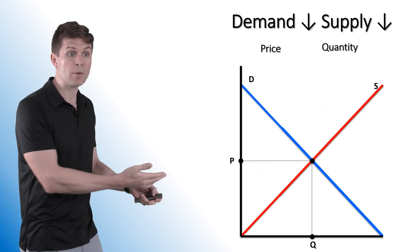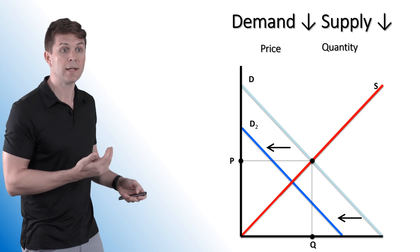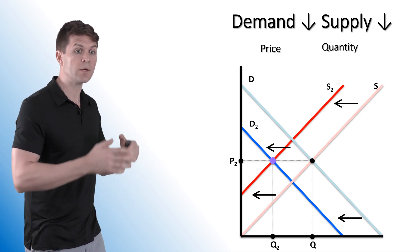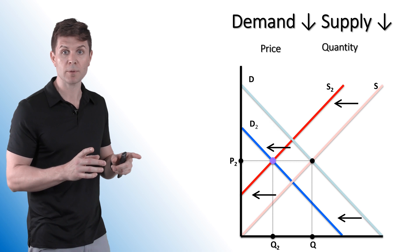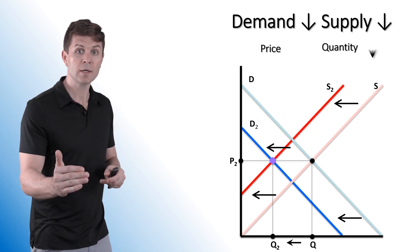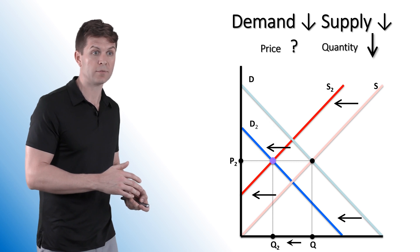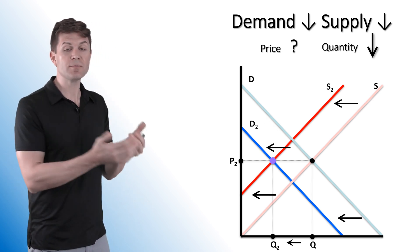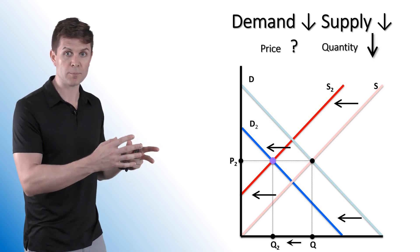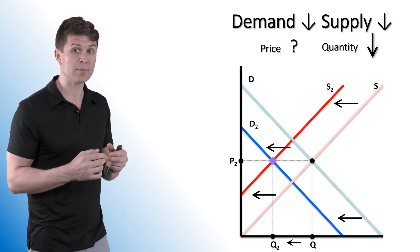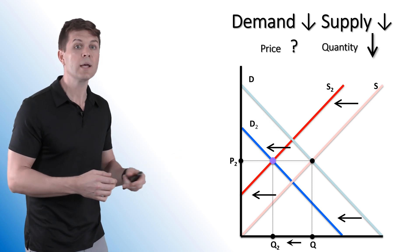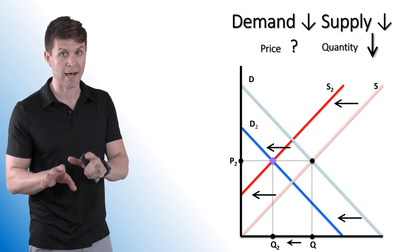If demand goes down, we're going to see a left-shifting demand curve, and with supply also going down we're going to see a left-shifting supply curve — once again giving us a new equilibrium. In this particular situation, we know what happens to quantity but not what happens to price. So if they shift in the same direction, we know what happens to quantity but price is going to be indeterminate. If they shift in opposite directions — supply increasing, demand decreasing — then we know what happens to price and not quantity.